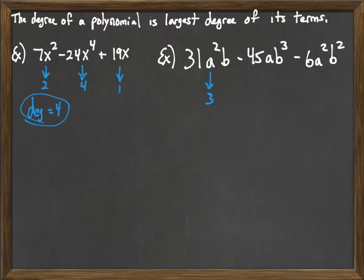So when I come to 31a squared b, remember the b has a 1 as its exponent. So that would be 2 plus 1 would make 31a squared b have degree 3. When I come to the 45ab to the 3rd, remember the a has a 1 as its exponent. So that would be 1 plus 3, degree 4. And then we come to the last one, 6a squared b squared. 2 plus 2 means that's also degree 4. So overall, we're degree 4. That's the biggest degree for the whole thing. So the degree of that polynomial is 4.